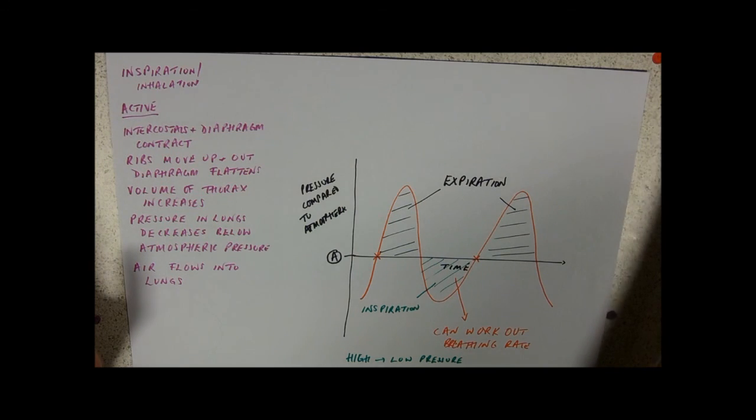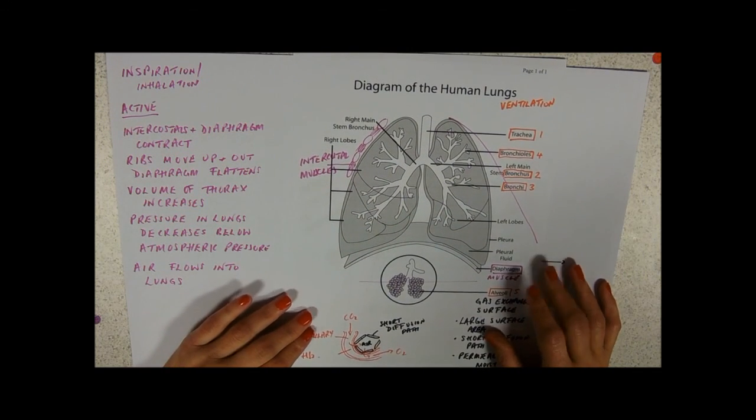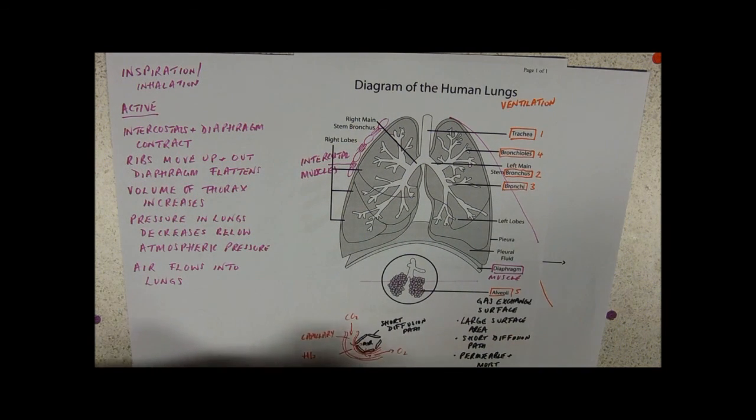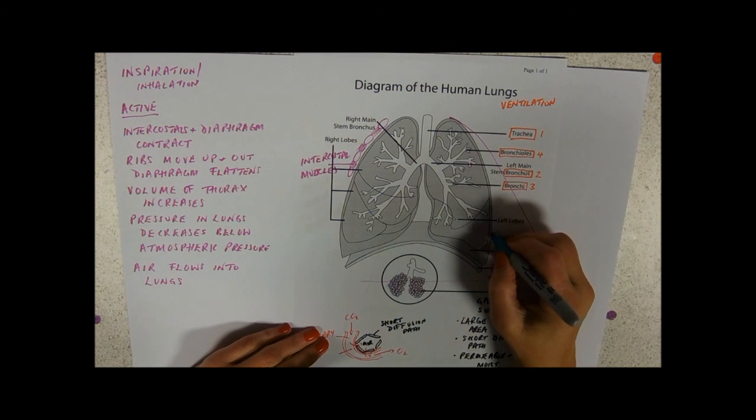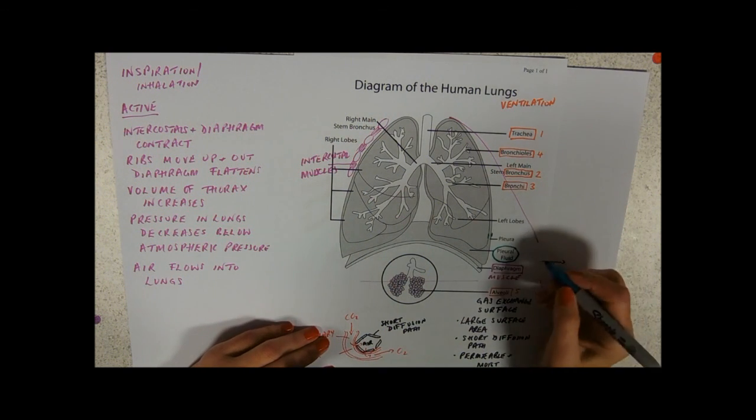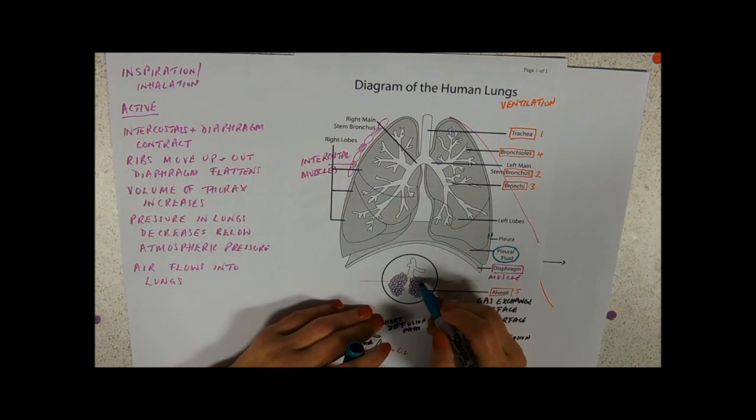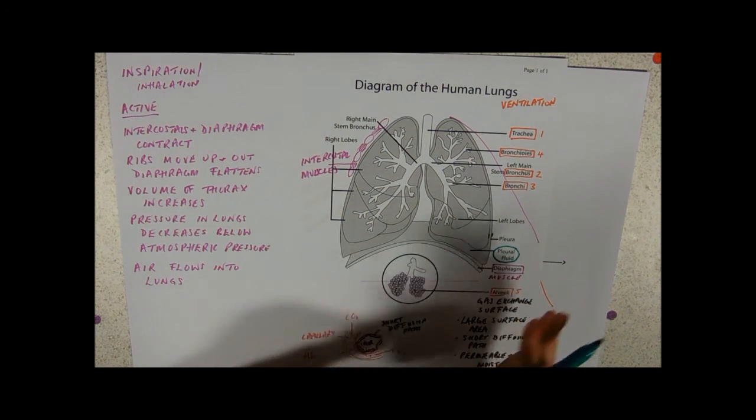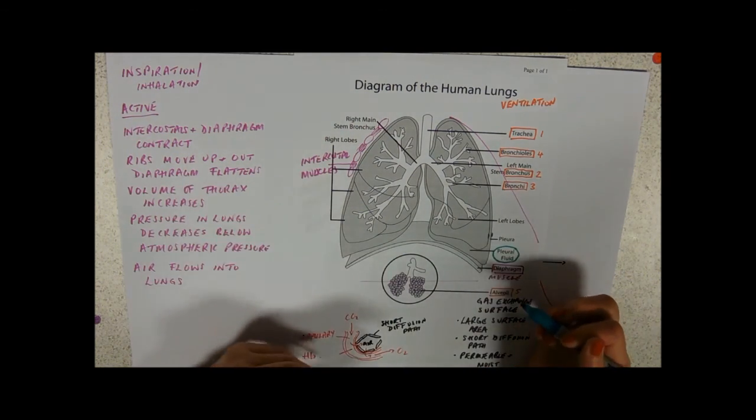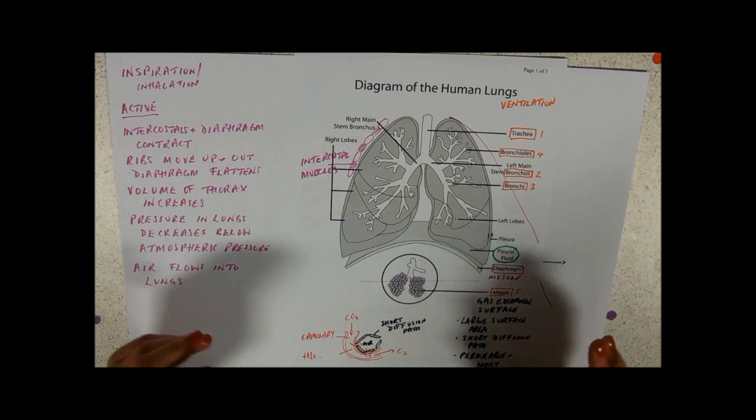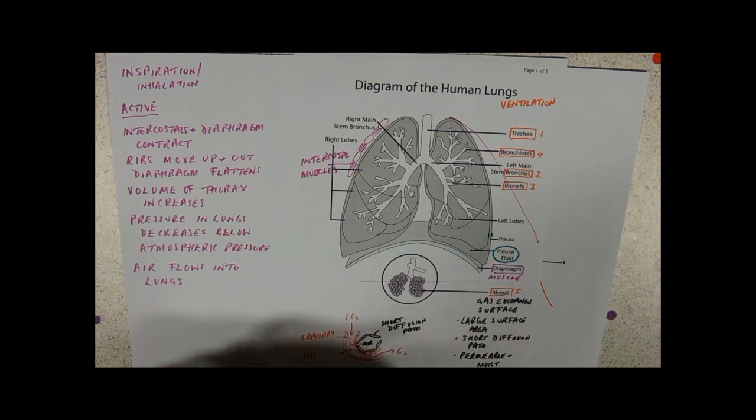Just to go back very briefly to our diagram, you can see that there are two things that I've not talked about, which is the pleural membranes and pleural fluid. Fluid is a dead giveaway that it's a lubricant. What this does is it stops any damage to these very delicate alveoli, which are around the edges of the lungs. So they're not in contact with something that's moving, like your ribs. Your pleural membranes secrete that. They just keep your lungs a bit slippery around the outside. That's their job.